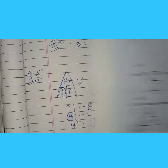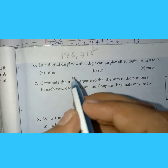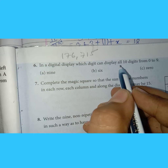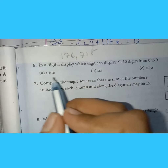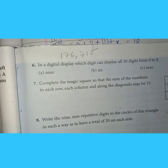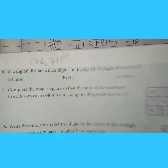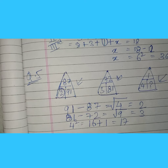Let's move to our third question. The question is: in a digital display, which digit can display all 10 digits from 0 to 9? The options are 9, 6, 0, and 8. It is written as 8, so the answer will be 8. Now let me show you how the answer is 8.